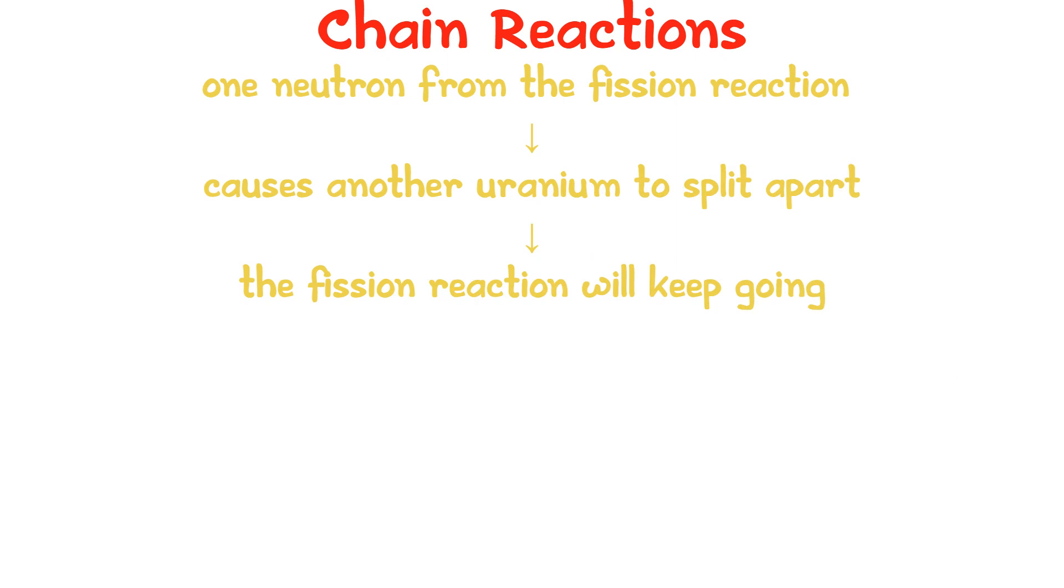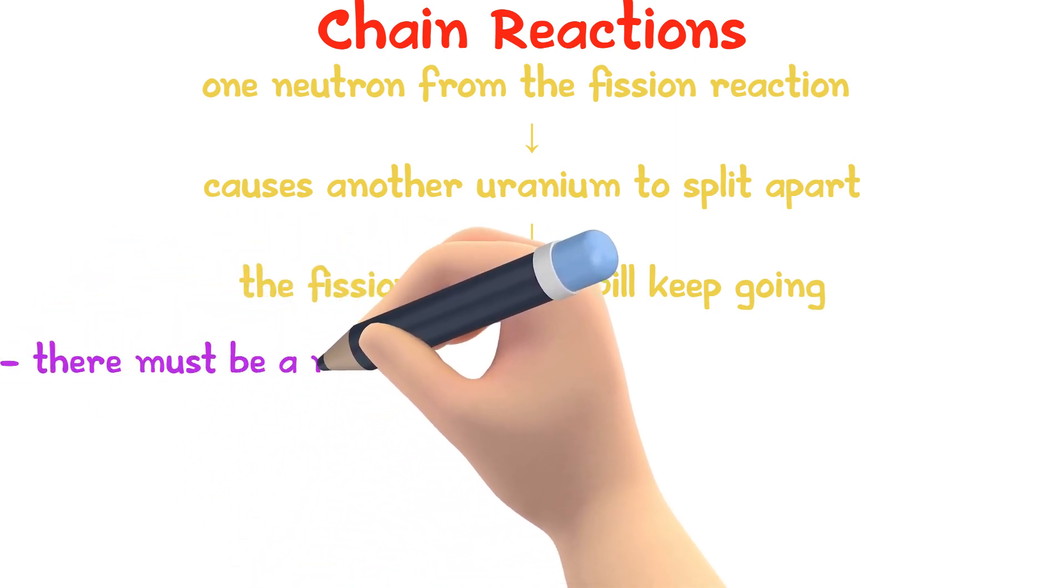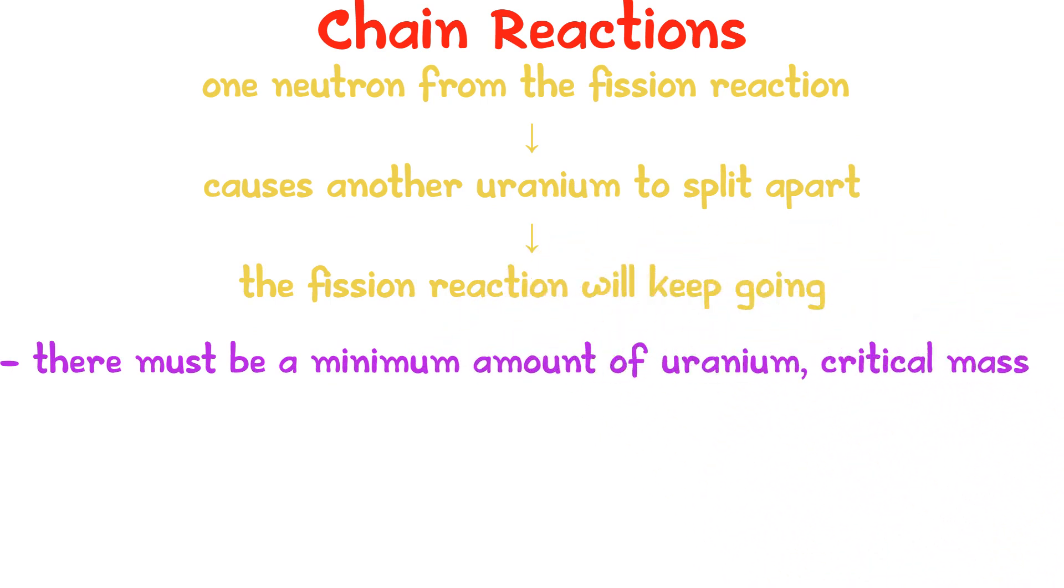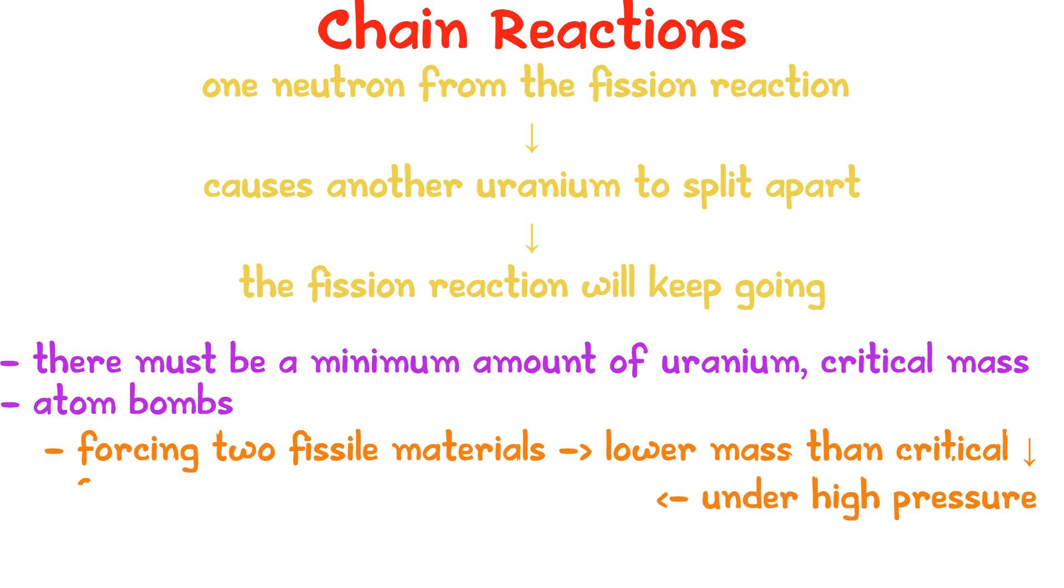For this to happen, there must be a minimum amount of uranium-235, which we call critical mass. Atom bombs use this technology by forcing two fissile materials with masses lower than the critical mass under high pressure, which forms a greater mass than the critical mass, resulting in a huge chain reaction.